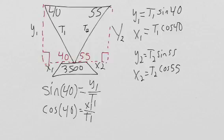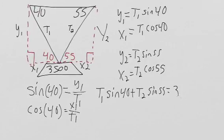So our two vertical components must add up to 3,500 pounds. So we get T1 sine 40 plus T2 sine 55, and that's going to be equal to 3,500.